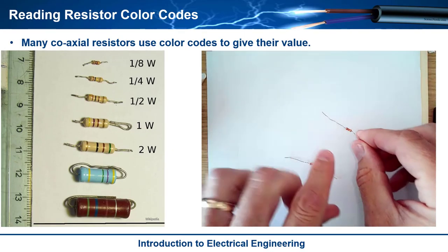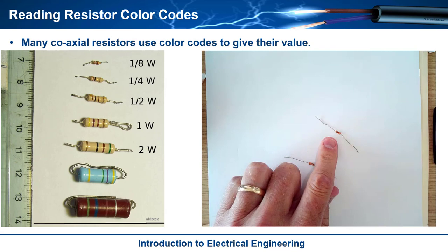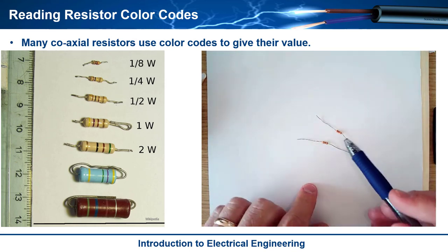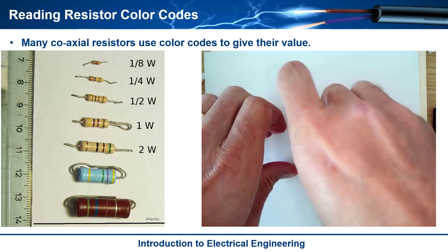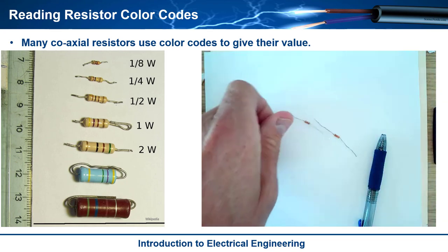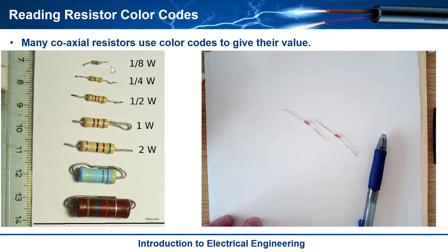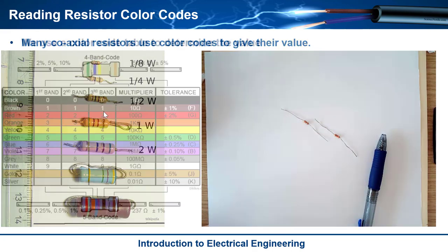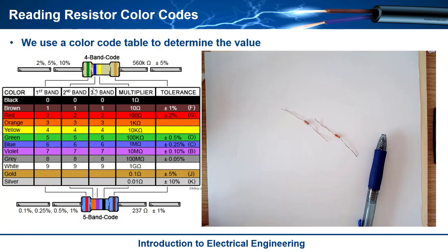These coaxial resistors that we use for breadboarding indicate their value of resistance using color codes. If you look at this, it's pretty hard to see in the video, but you can see there's bands on there. This image shows you these different sized resistors and the various bands. A resistor can have either four or five bands. We're using a quarter-watt resistor and a four-band resistor in this example. What you do with these bands is you look them up in a color code table to determine the actual value in addition to the tolerance.